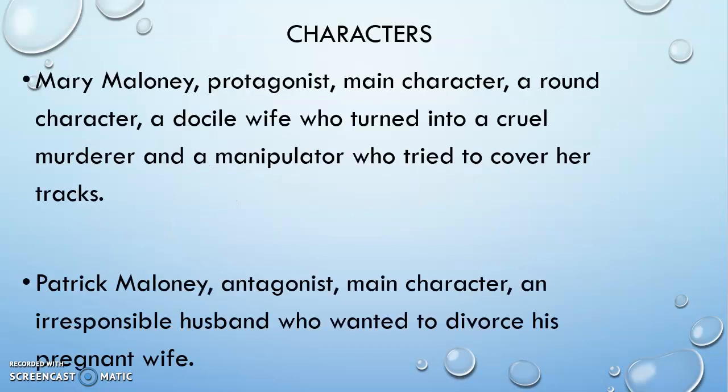The characters: Mary Maloney is the protagonist — the main character. She is a round character, meaning a character that changes through the story. At the beginning she is a docile wife — very meek, mild, simple, innocent, humble, somebody that cannot do anything wrong — who turns into a cruel murderer and manipulator who covers her tracks. Towards the end she has not only committed murder but is very cleverly covering all her tracks, so the police could not catch her or prove that she was the murderer.